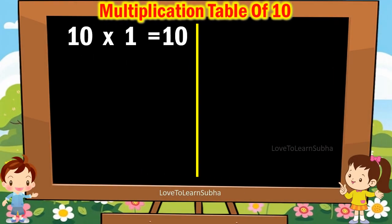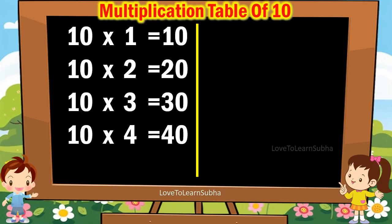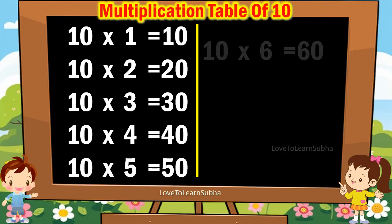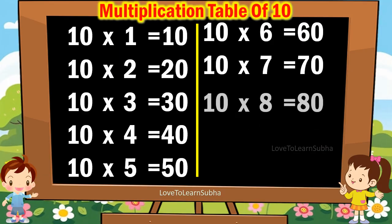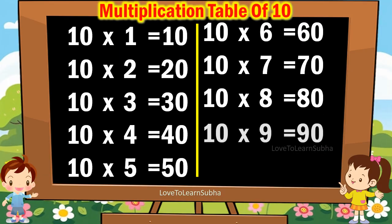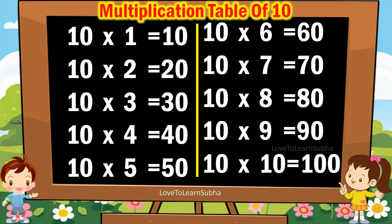10 1s are 10. 10 2s are 20. 10 3s are 30. 10 4s are 40. 10 5s are 50. 10 6s are 60. 10 7s are 70. 10 8s are 80. 10 9s are 90. 10 10s are 100.